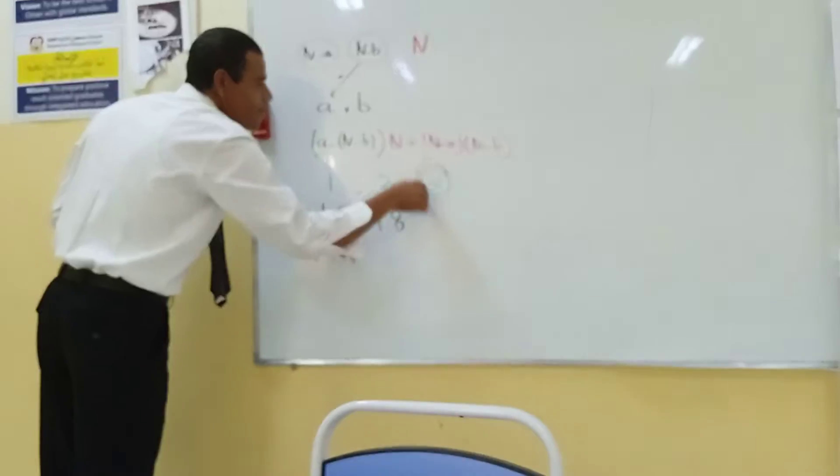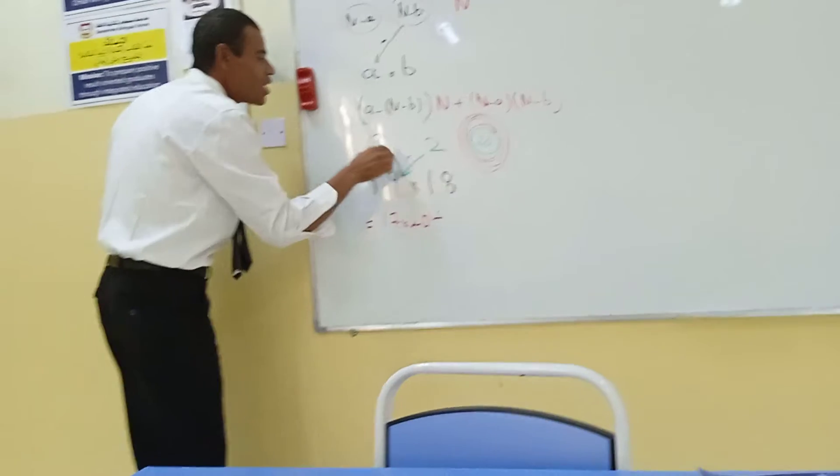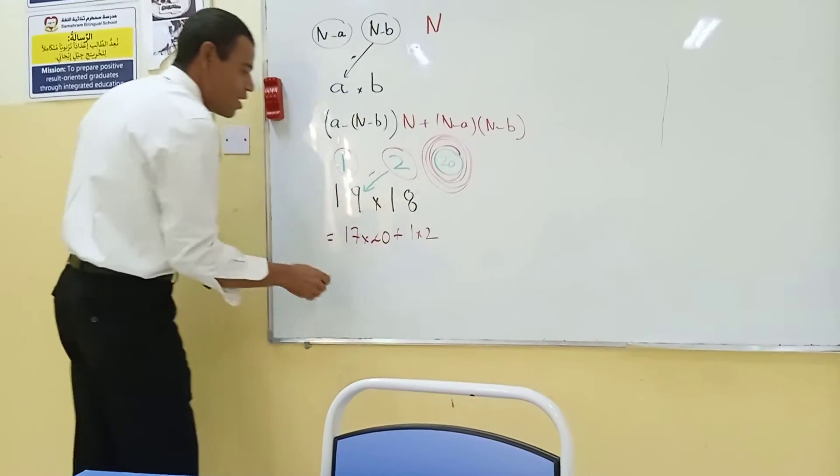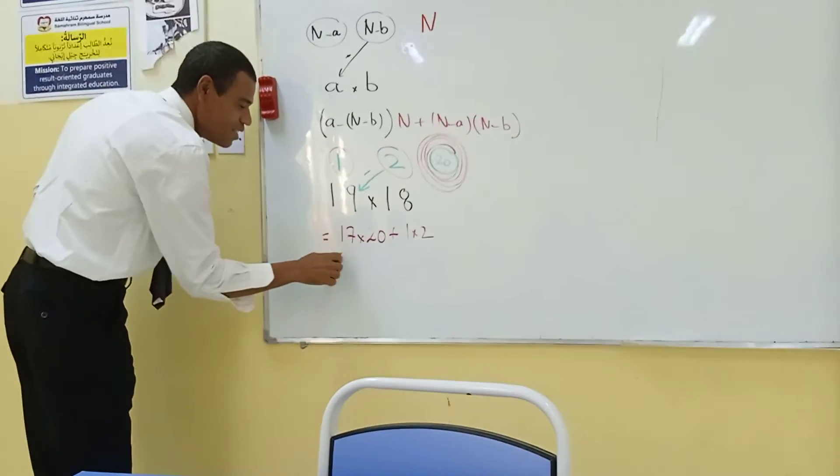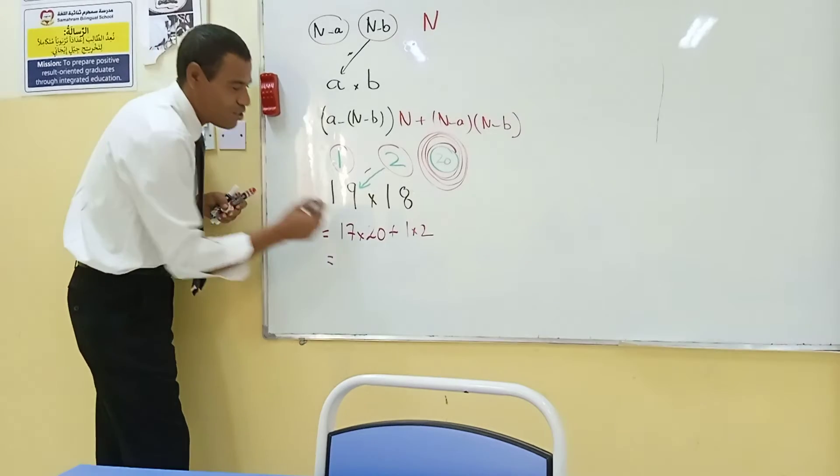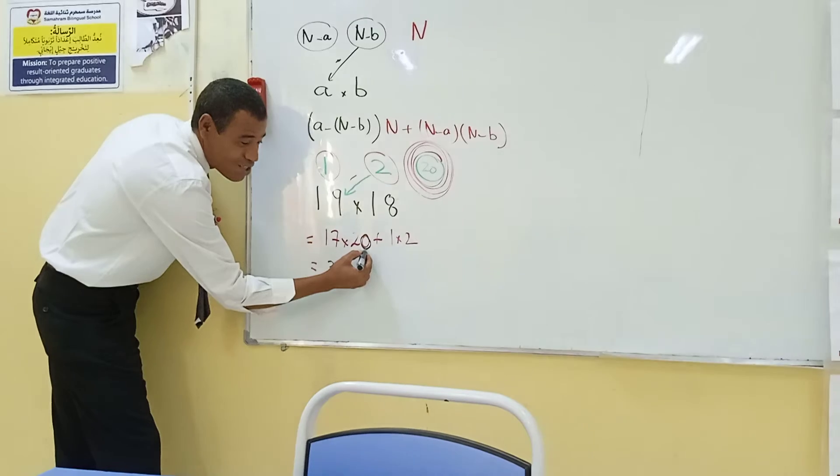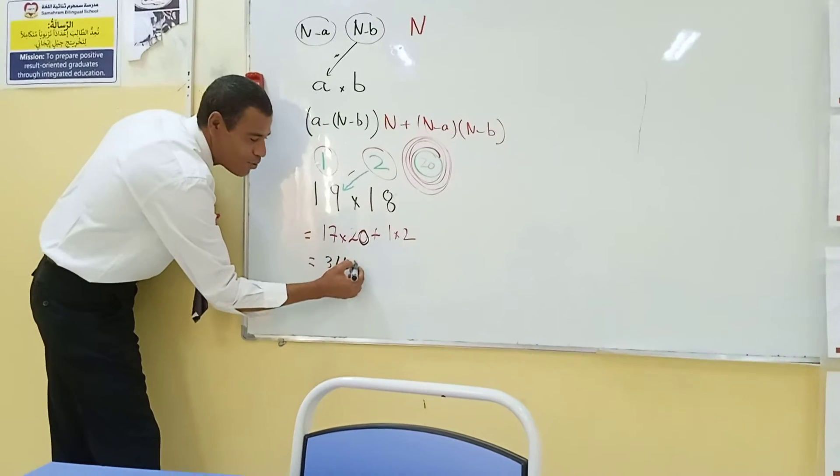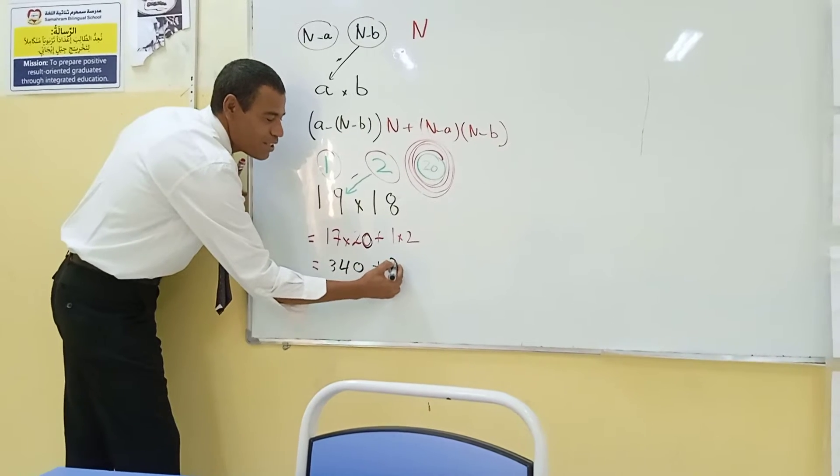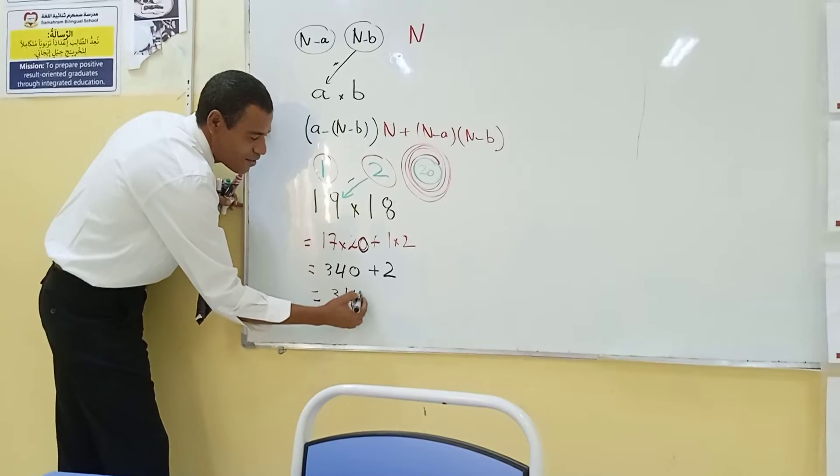Multiply by the N number which is 20, plus the product of 1 multiply by 2. Therefore double 17 is what? 34. I will write 34. Then shall I annex this one? No, it will be 340 plus 1 into 2, which is 2. Therefore the last answer is 342.